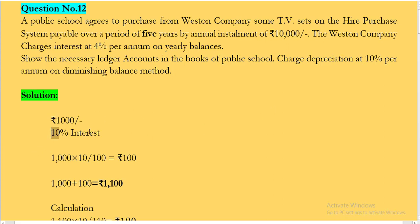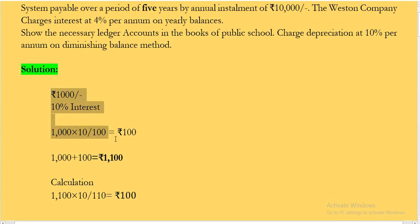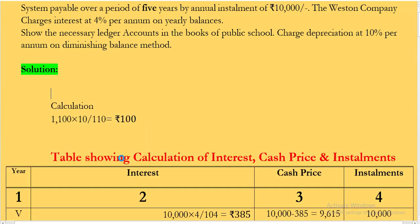For example, if you have Rs1,000 at 10% interest for one year, the interest becomes Rs100. If we add Rs100 interest to the principal, it becomes Rs1,100. Now if we only have Rs1,100 and the rate of interest is 10%, and we need to find the principal, the formula applied here is: 1100 × 10 ÷ 110. When finding the principal, the interest rate is added to 100 in the denominator. This gives us the interest amount, and since we knew Rs1,100, we can find the principal.